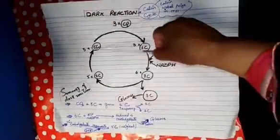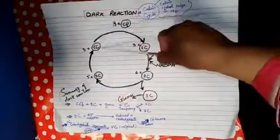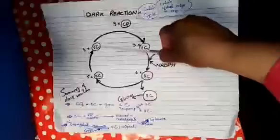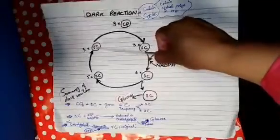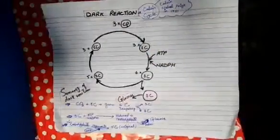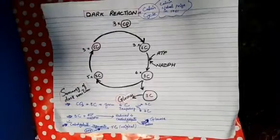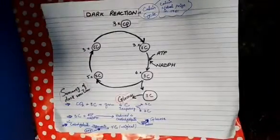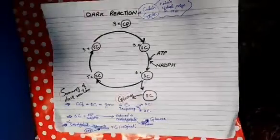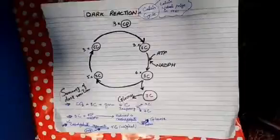This step involves use of ATP, and in this way ribulose-biphosphate will be formed again in its original form. That is all about the dark reaction. The importance of chlorophyll and limiting factors will be discussed in the next lecture.